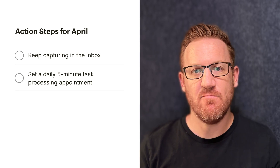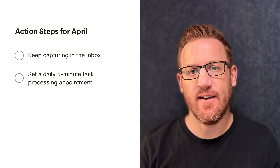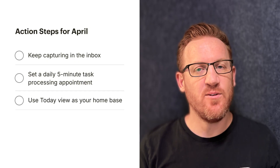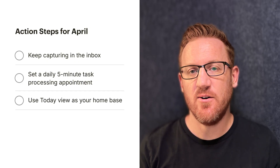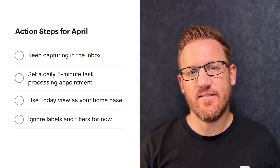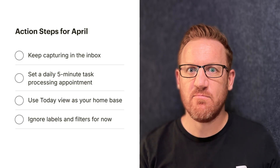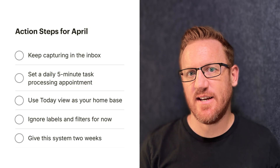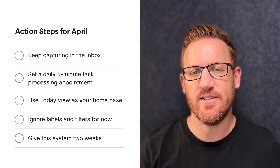April, here's some homework just for you. Keep capturing everything in your inbox — you're nailing this part already. Then let's create a recurring task to spend five minutes going through your inbox every day: check what's in there, clarify it. Use today view as your home base — you can even set this as the default if you want. Let's ignore labels and filters for now; you can even hide them from the settings menu if you find them distracting. Give this system two weeks — even more if you like — before changing anything. And our mantra coming out of this: capture, clarify, and complete.